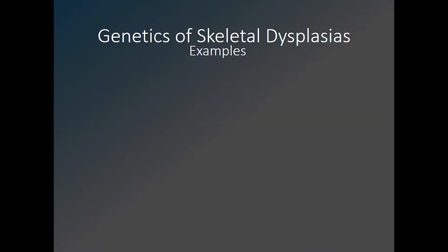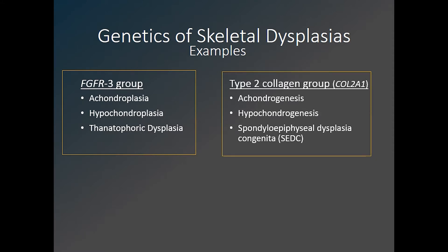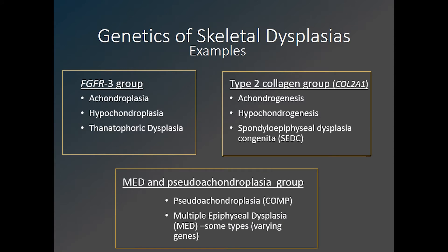Here are a couple of examples. Mutations in the fibroblast growth factor receptor 3 gene, or FGFR3, may lead to achondroplasia, the most common non-lethal skeletal dysplasia, or others of varying clinical severity, including hypochondroplasia and thanatophoric dysplasia. Mutations in the gene for type 2 collagen may lead to some forms of achondrogenesis, hypochondrogenesis, and spondyloepiphyseal dysplasia congenita. The multiple epiphyseal dysplasia and pseudoachondroplasia group is also very common. While pseudoachondroplasia results from a mutation in the COMP gene, MED has multiple types with many different genetic mutations which have been described in addition to the COMP gene.